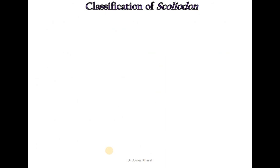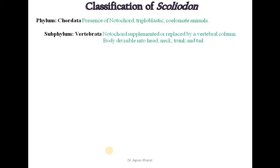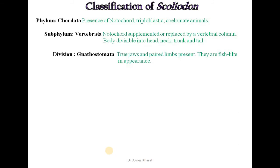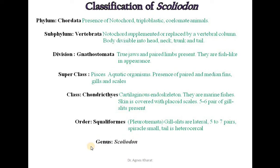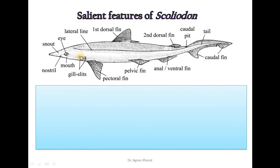The next organism from superclass Pisces is Scoliodon. Its classification: phylum Chordata, subphylum Vertebrata, division Gnathostomata, superclass Pisces, class Chondrichthyes — as it has a cartilaginous endoskeleton, is a marine fish, and skin is covered with placoid scales. Order is Squaliformes and genus is Scoliodon. In the diagrammatic representation, the mouth is situated ventrally in the snout region. The body is divided into head, trunk, and tail; the caudal fin is heterocercal.